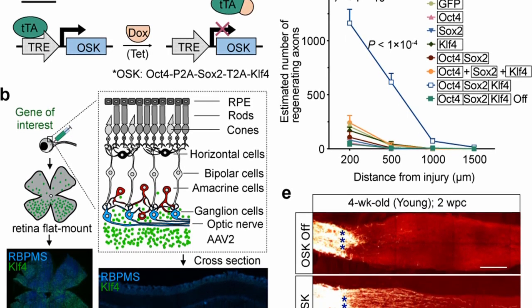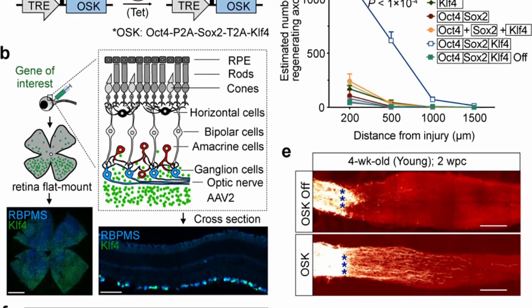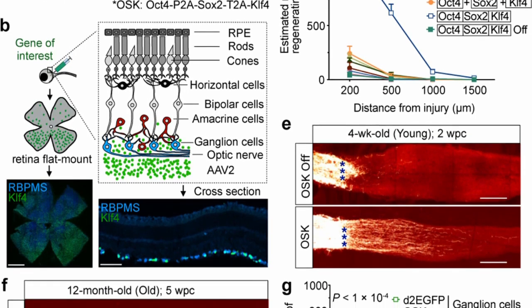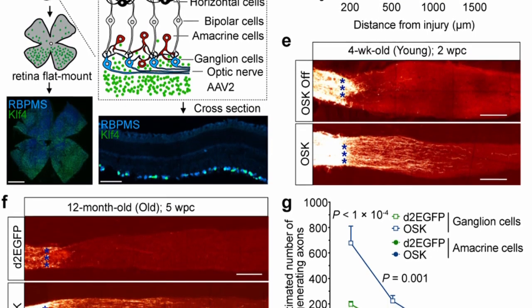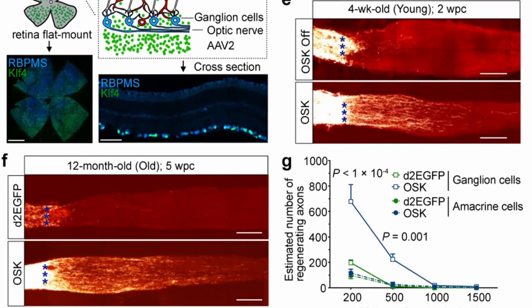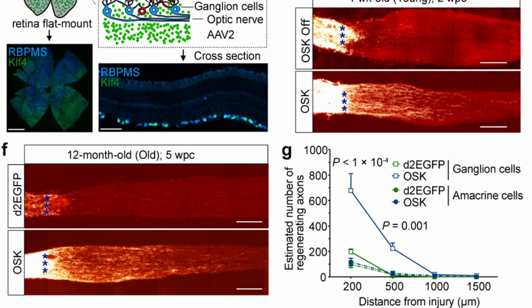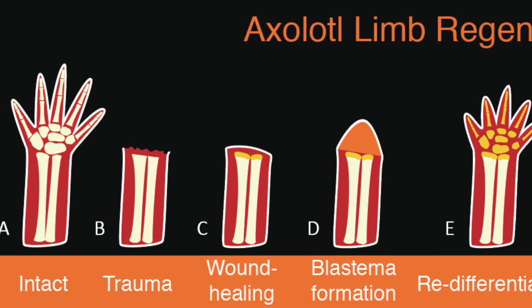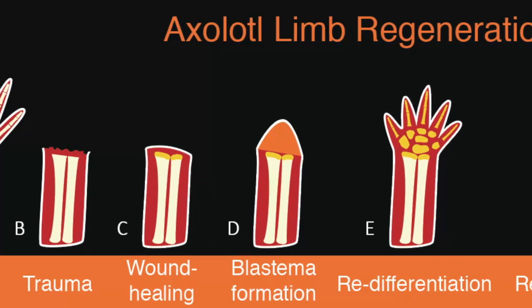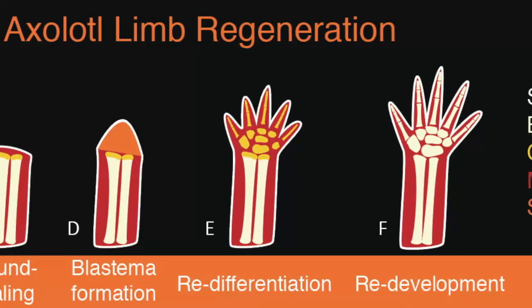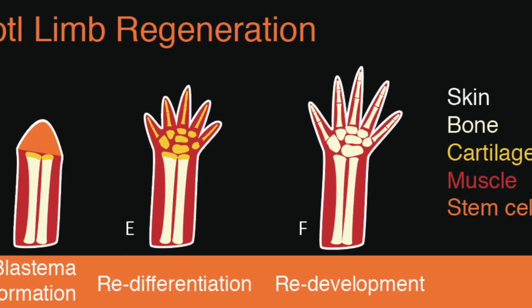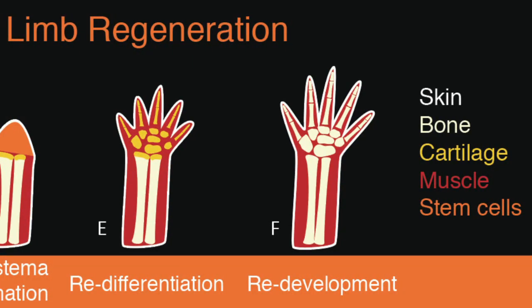This process can potentially reverse cellular aging and restore a more youthful and functional state to damaged or aged tissues. It aims to rejuvenate or reprogram cells to a more embryonic-like state where they have a greater capacity for growth and repair. By reactivating factors that exist in an embryological state, some researchers suggest this technology could be used to regrow limbs in the future, in the same way that axolotls and lizards are able to, which doesn't seem outside the realms of possibility.